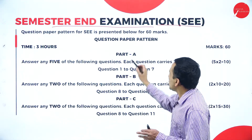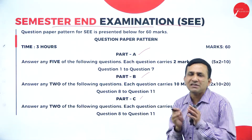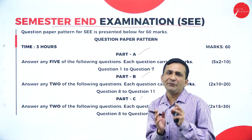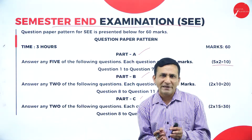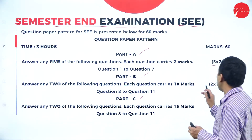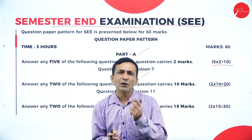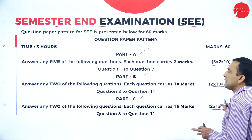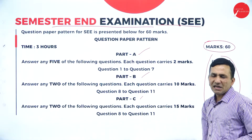For the semester end examination, the question paper has three parts. Part A carries seven questions; attend any five, each for 2 marks — totalling 10 marks. Part B has four questions; attend any two, each for 10 marks — totalling 20 marks. Part C has four questions; attend only two, each for 15 marks — totalling 30 marks. Altogether the external paper is set for 60 marks.